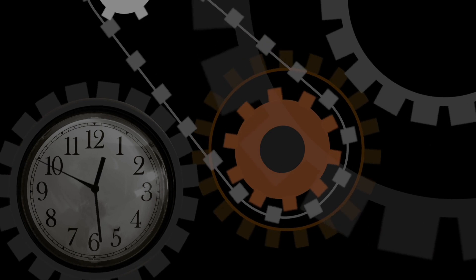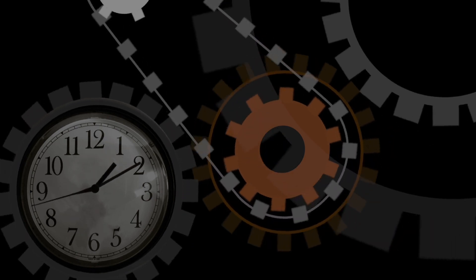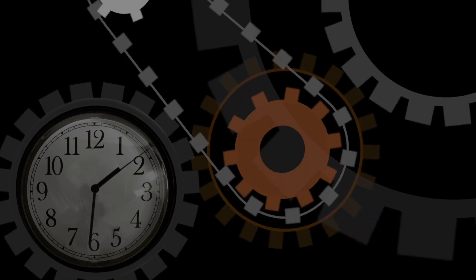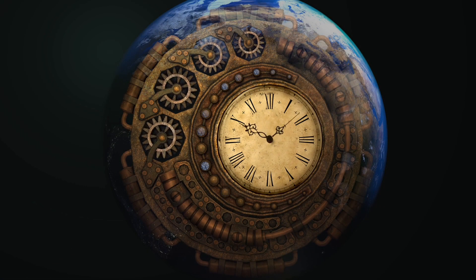Number 7, a jiffy is an actual unit of time. It is the time it takes for light to travel 1 cm in a vacuum, which is about 33.3564 picoseconds. If you don't get it, it's a lot.